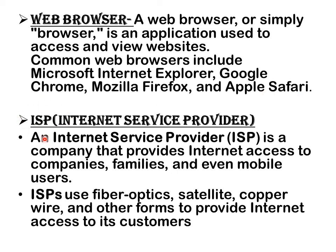The next component of the web is ISP — Internet Service Provider. An ISP is a company that provides internet access to companies, families, and even mobile users. ISPs use fiber optics, satellites, or copper wire to provide internet access to their customers. Fiber optics and copper wire provide wired internet, while satellites are used for wireless internet access.